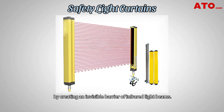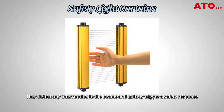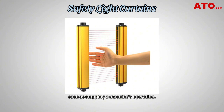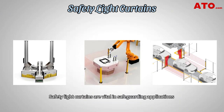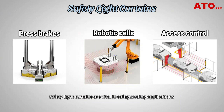Safety light curtains are designed to protect personnel and machinery by creating an invisible barrier of infrared light beams. They detect any interruption in the beams and quickly trigger a safety response, such as stopping a machine's operation. Safety light curtains are vital in safeguarding applications like press brakes, robotic cells and access control.